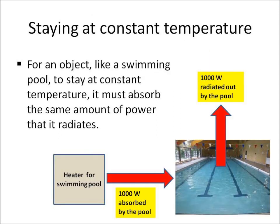For an object, like a swimming pool, to stay at constant temperature, it must absorb the same amount of energy every second that it radiates. In this example, the swimming pool is absorbing a thousand joules a second, or a thousand watts, and it's also radiating a thousand joules per second, or a thousand watts.